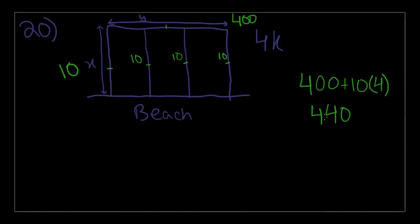If X equals 10, these also equal 10 because they are the same length. This is a rectangle, and those go down perpendicularly to the beach. So those are also 10, 10, 10, 10. The total length in meters of all the rope required is 400 plus 10 times 4. So 400 plus 40, which is 440. Now we need to look at the answer choices and figure out which one holds true when you plug in the Y value.